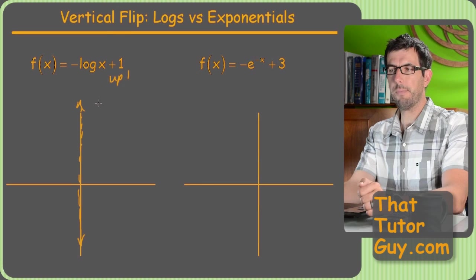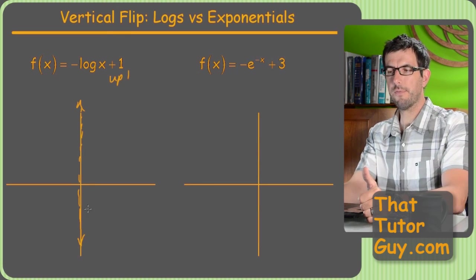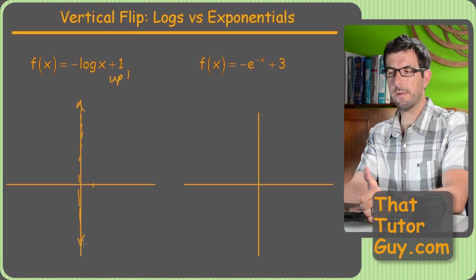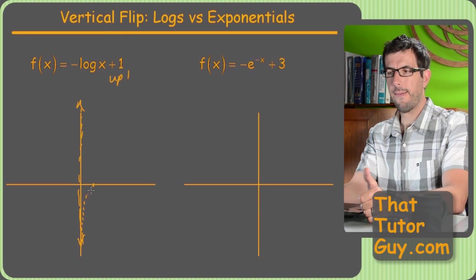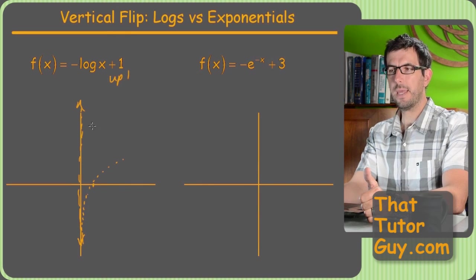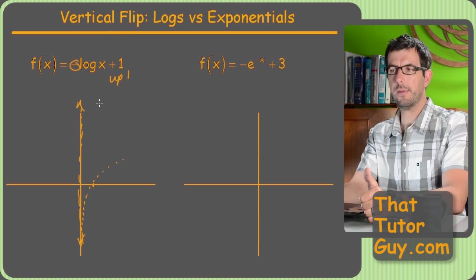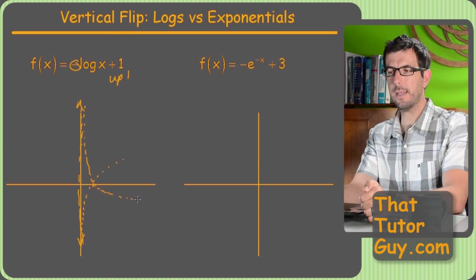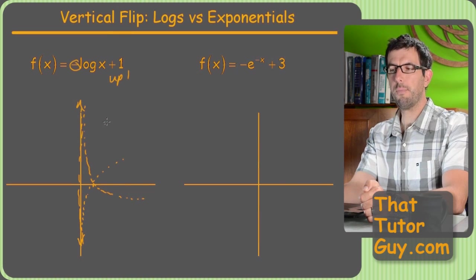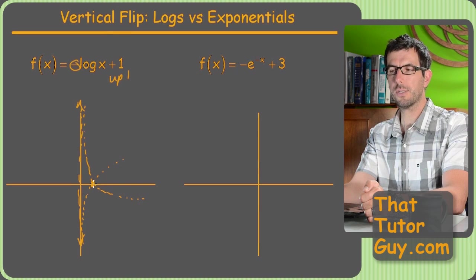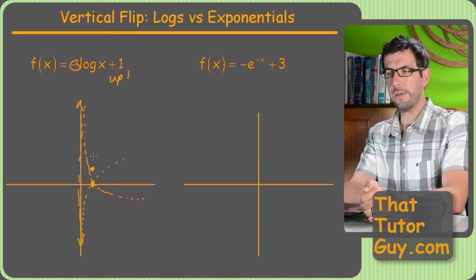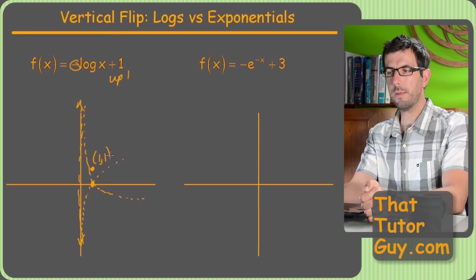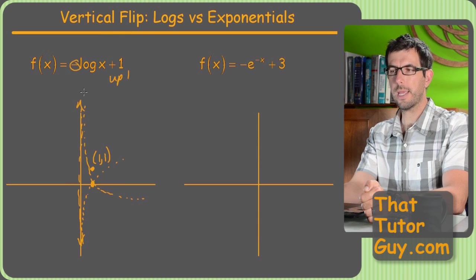This thing does have an upshift of one. So there's a flip. Now I'm going to encourage you to do the flips first. So my parent function would have gone through right here, but then it has a vertical flip, which means it's going to come out of the north and cross like that, but then it shifted up one. So this key point that was at (1, 0) needs to go up one. It's right there at (1, 1), and now we're just going to draw in our thing.